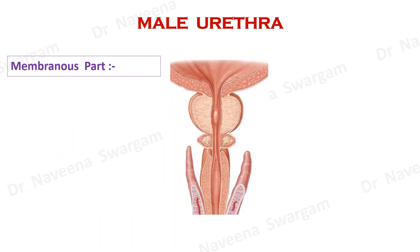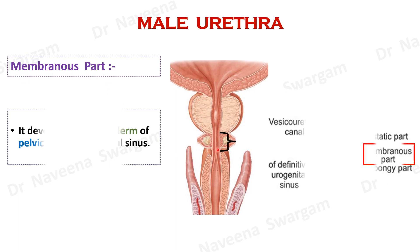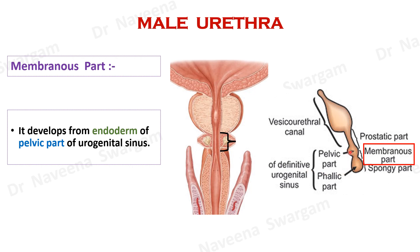Now let's see the development of membranous part of male urethra. It develops completely from endoderm of pelvic part of urogenital sinus.